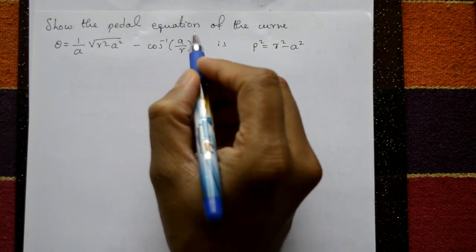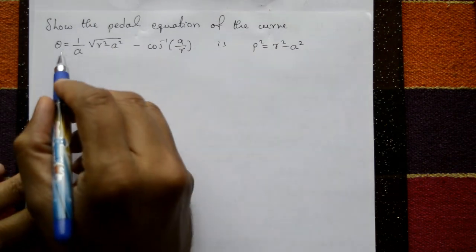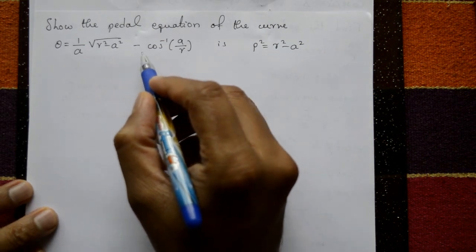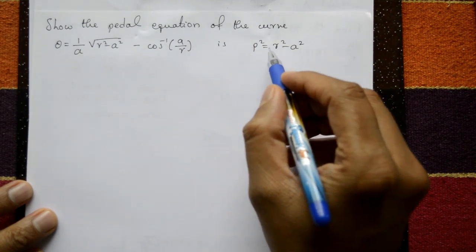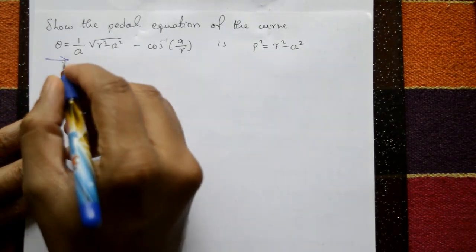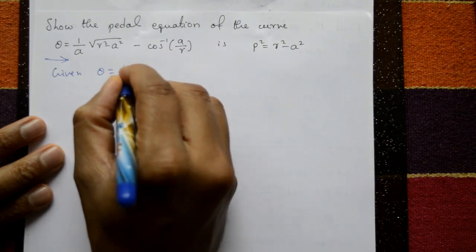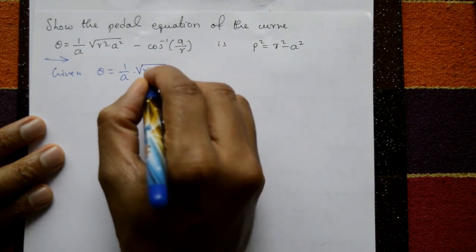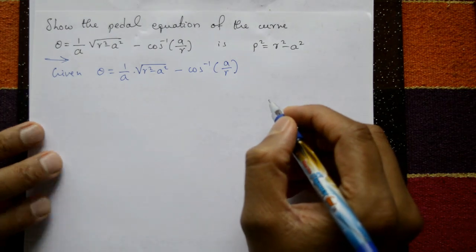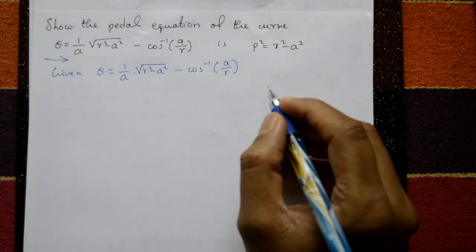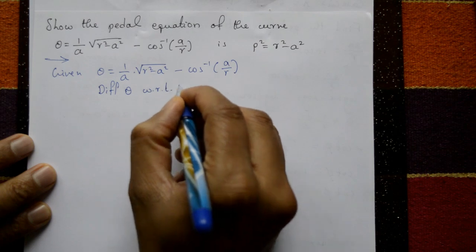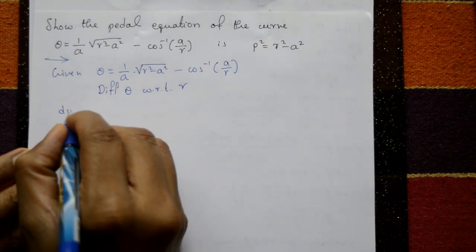Show that the pedal equation of the curve θ = (1/a)[√(r² - a²) - cos⁻¹(a/r)]. The required final answer is p² = r² - a². Given θ = (1/a)[√(r² - a²) - cos⁻¹(a/r)]. Now in this problem we differentiate θ with respect to r.